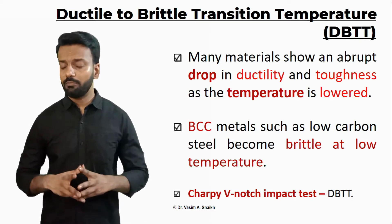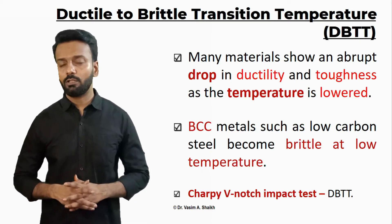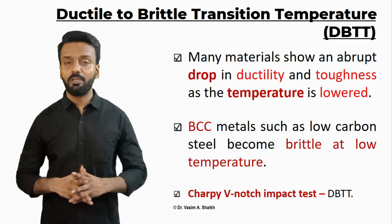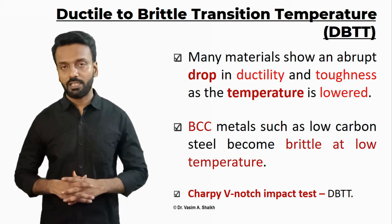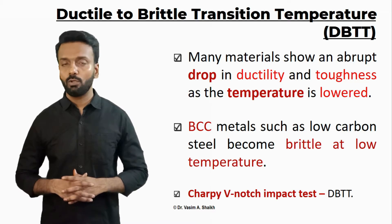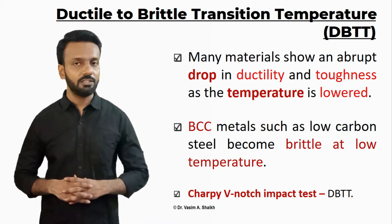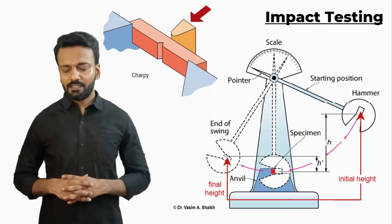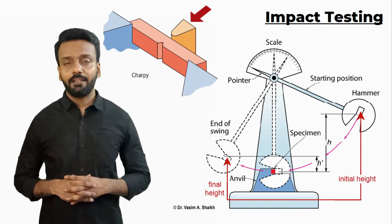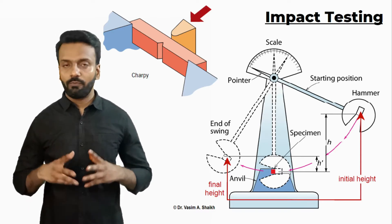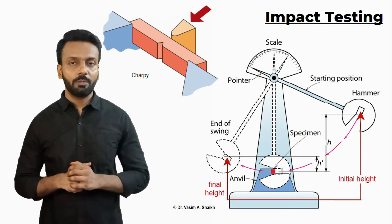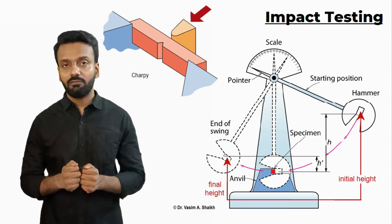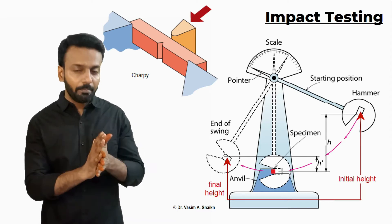We can carry out an impact test, which is known as the Charpy V-notch test, to look into the ductile to brittle transition temperature. Impact testing is carried out to find the impact strength of the material — what is the strength of the material when it experiences an impact?